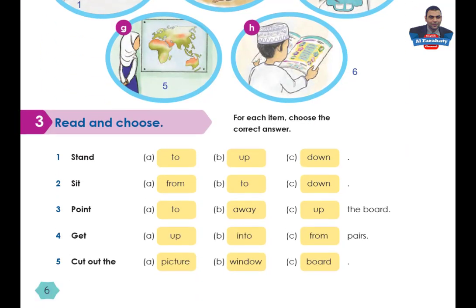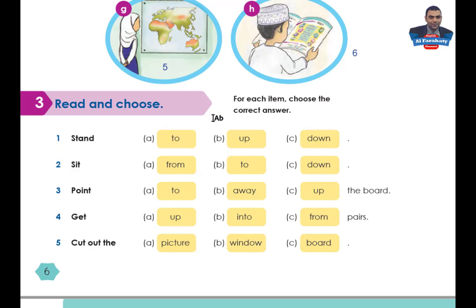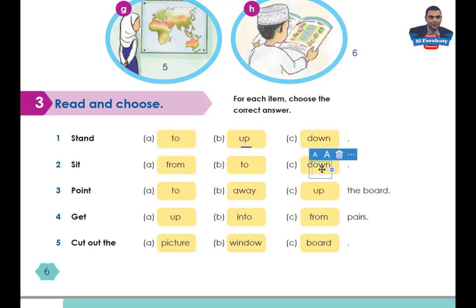Activity 3: Read and choose. For each item, choose the correct answer. Number 1: Stand up. Excellent. Number 2: Sit down. Excellent. Number 3: Point to the board. Number 4: Get into pairs. Excellent. Number 5: Cut out the picture. Excellent.